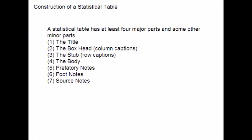To construct a table, it is important to first learn what the parts of a good statistical table are. When put together in a symmetrically ordered manner, these parts form a table. The simplest way of conceptualizing a table is data presented in rows and columns along with some explanatory notes. Tabulation can be done using one-way, two-way, and three-way classification depending upon the number of characteristics involved. These are the essential things to be included for a good table.